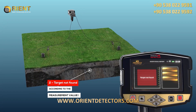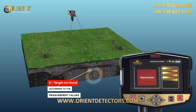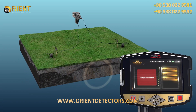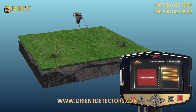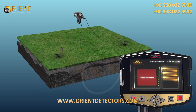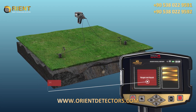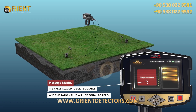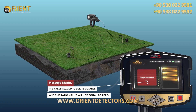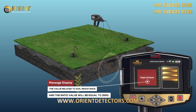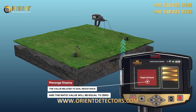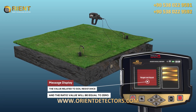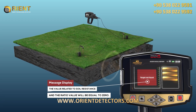Target Not Found. Here, the curves or ellipses will not be drawn. Instead, a message will be displayed indicating that the target was not found. In this case, the value related to soil resistance and the ratio value will both be equal to zero.